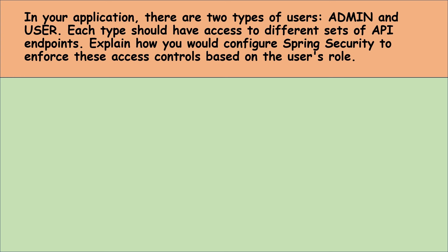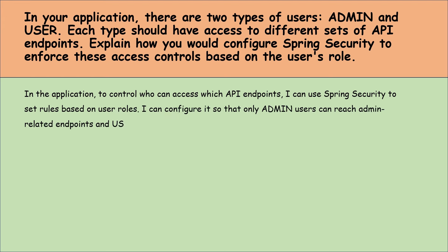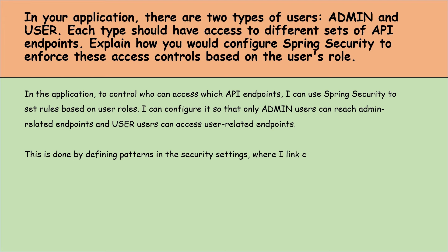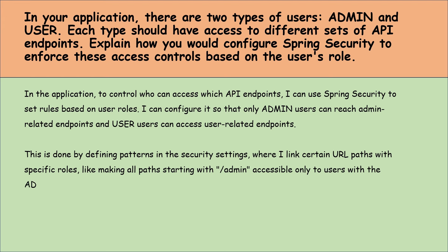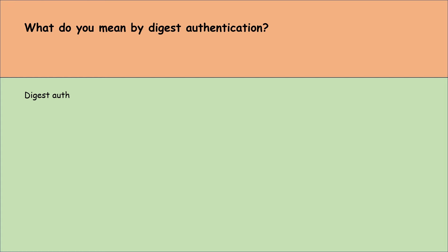In your application there are two types of users — admin and user — each with access to different API endpoints. How would you configure Spring Security to enforce these access controls based on user roles? To control who can access which API endpoints, I can use Spring Security to set rules based on user roles. I configure it so that only admin users can reach admin-related endpoints and regular users can access user-related endpoints. This is done by defining URL patterns in the security settings, linking paths starting with /admin to the admin role and paths starting with /user to the user role.